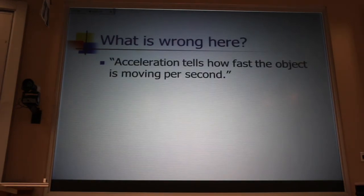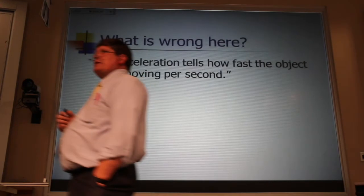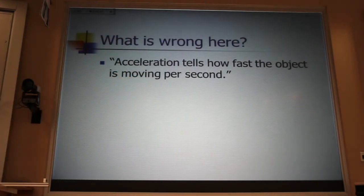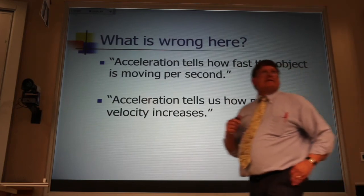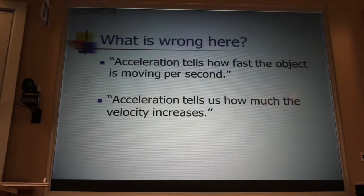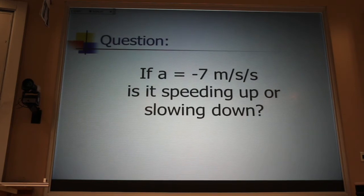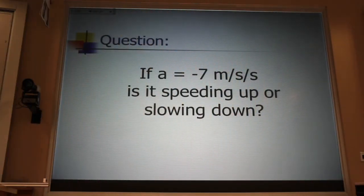What's wrong with this statement: 'Acceleration tells how fast the object is moving per second'? Why is that not only wrong, but sick and wrong? Because it's not how fast it's moving — the idea of a change is missing. The change in velocity is missing. What about this one: 'Acceleration tells how much the velocity increases'? Acceleration can also describe decreasing velocity. And a unit of time is also missing. So it has two problems. Suppose I tell you a car has an acceleration of minus 7 meters per second every second — is that car speeding up or slowing down? It depends on your coordinate system.